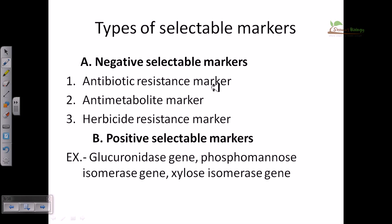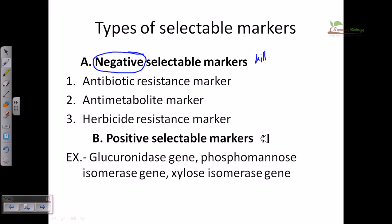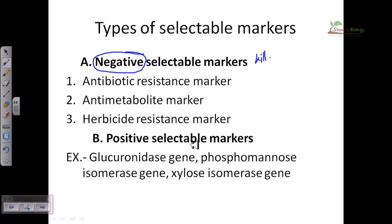Negative selectable markers lead to a negative effect on the plant cell or host cell — they will ultimately kill the cell. Positive selectable markers, in contrast, won't kill the cell; instead they help the cell survive and remain normal while expression is still confirmed. Most selectable markers used are negative because overexpression typically leads to cell death.